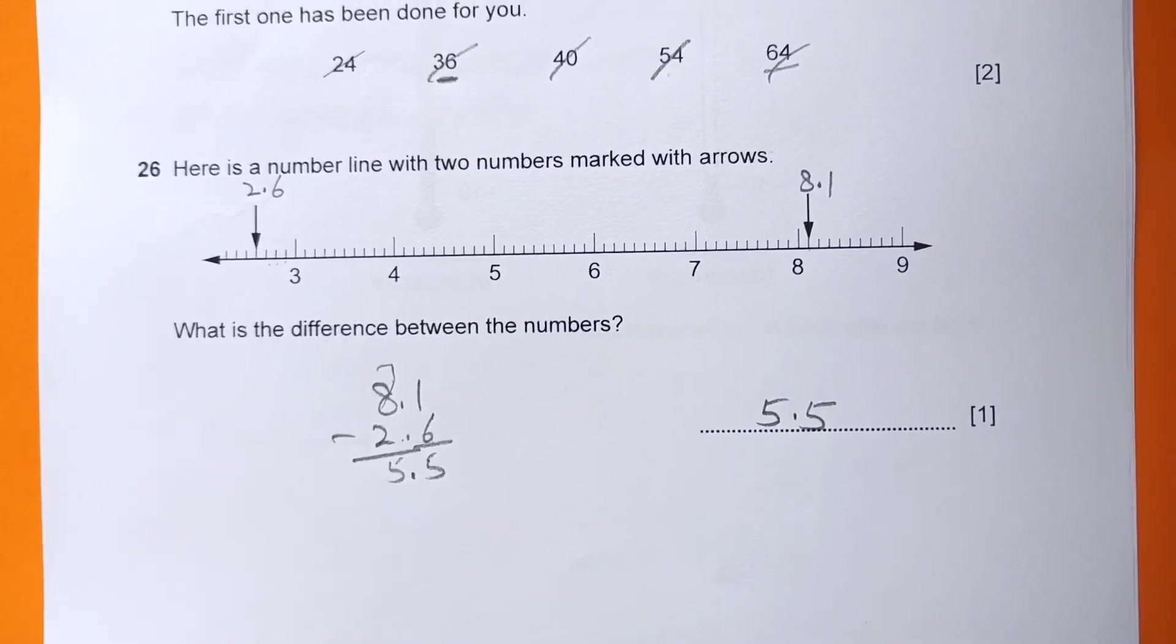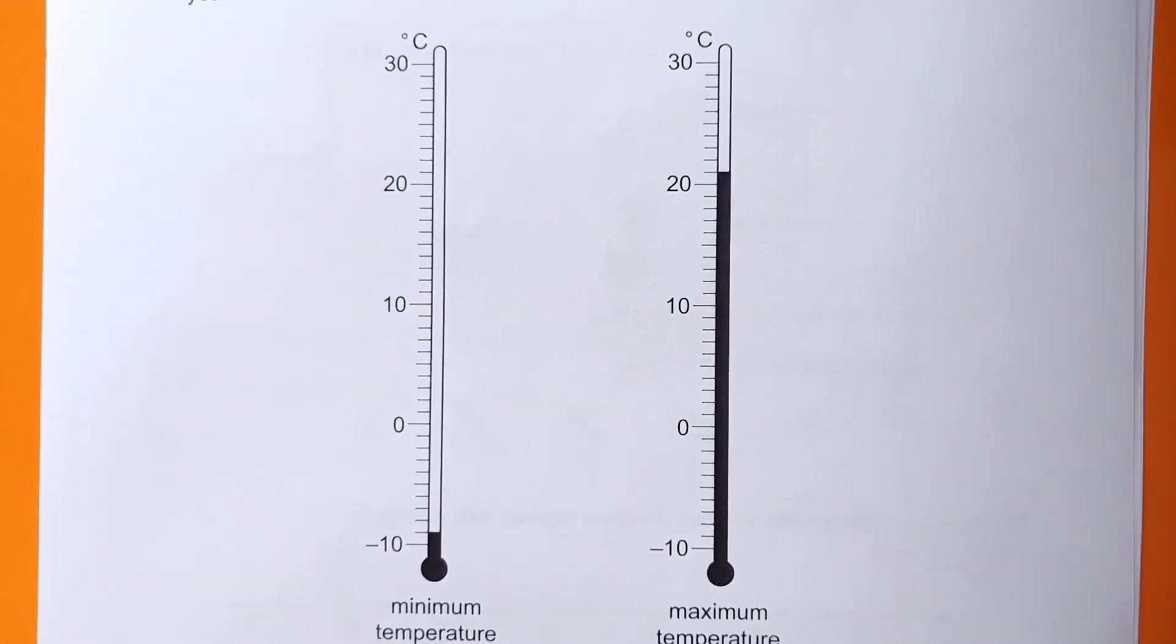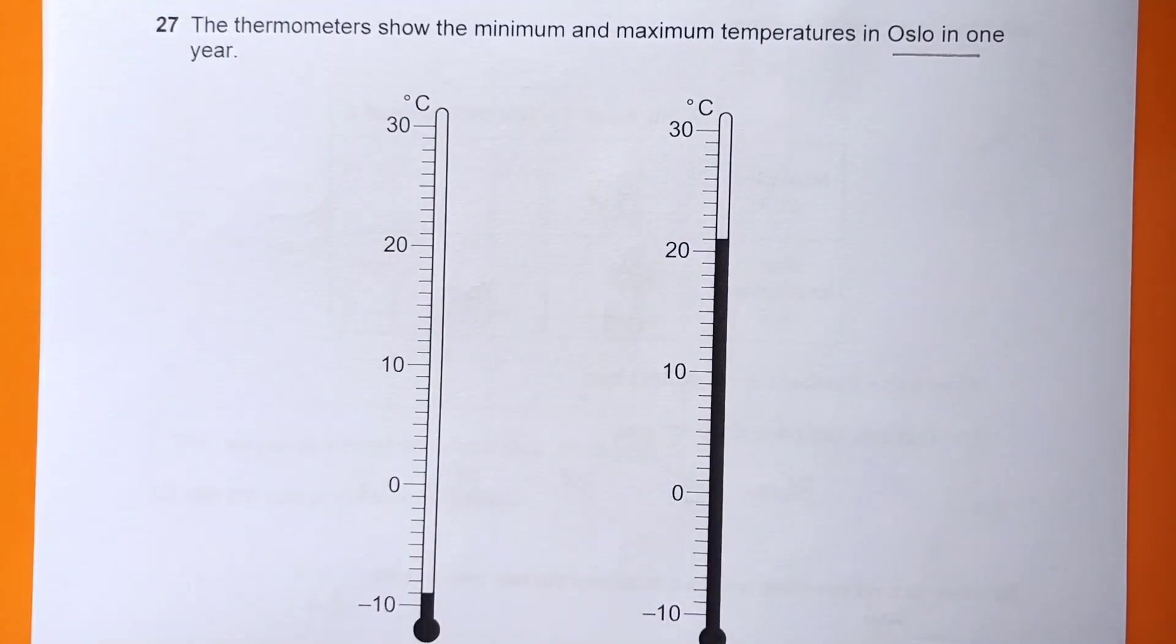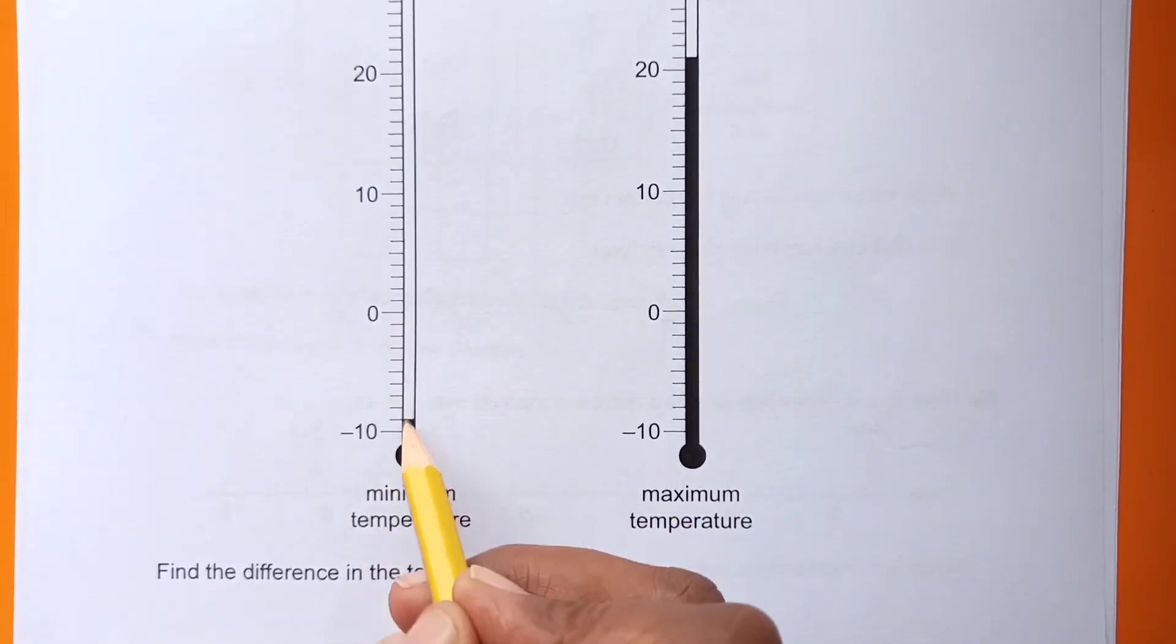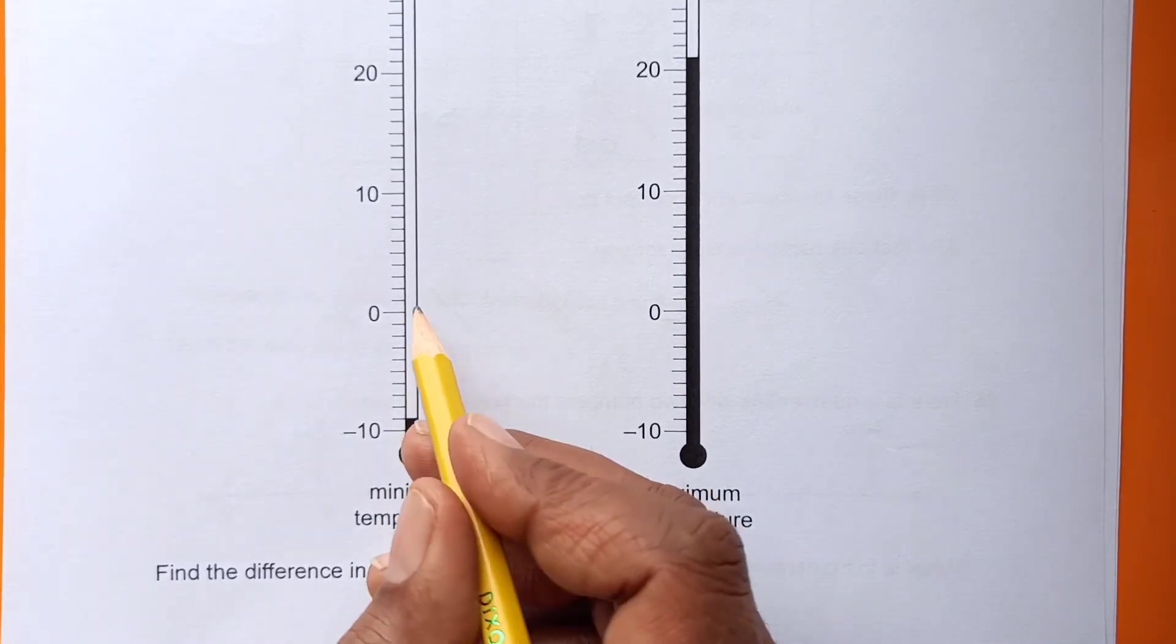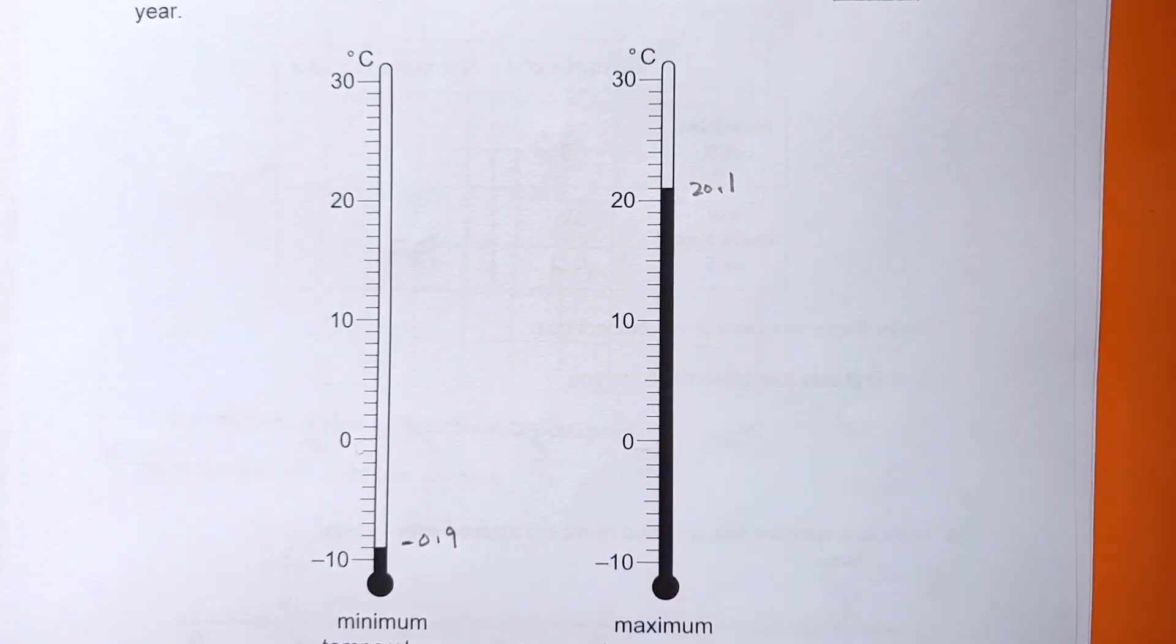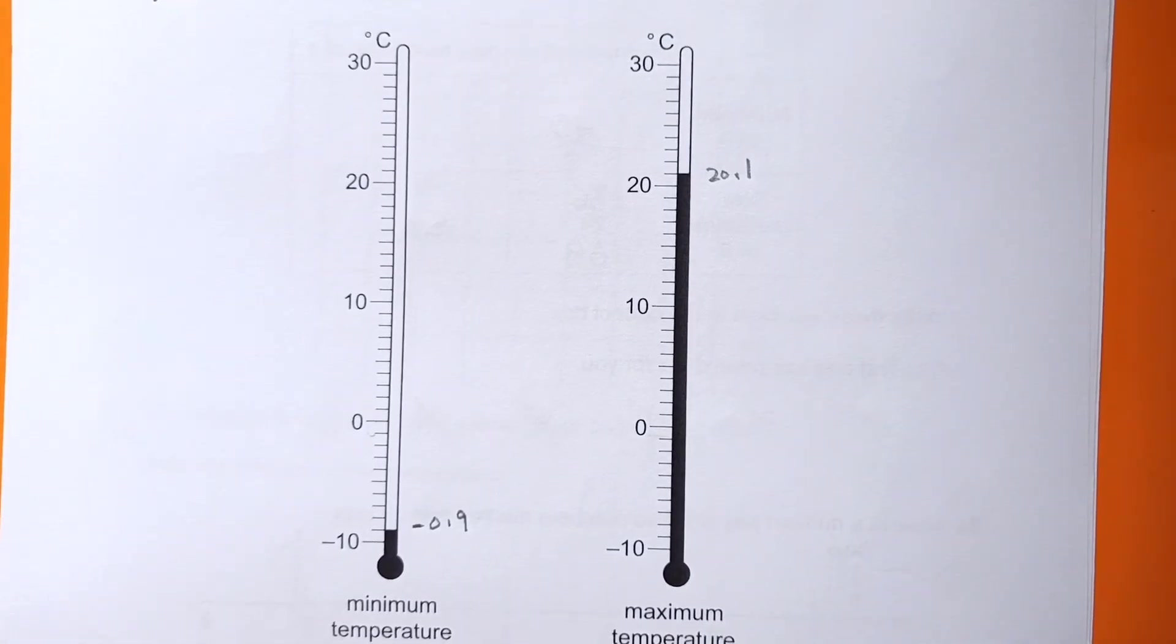Number 27: Here we have these thermometers. The thermometer shows the minimum and maximum temperature in Oslo in one year. Find the difference. First you need to read the scale. This is from 0 to 10, so this is negative 10. This is one less than that - 0.1, 0.2 - this will be negative 0.9. This is going to be 20.1.